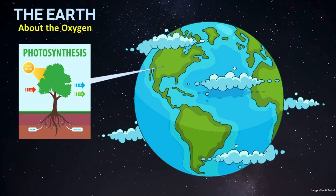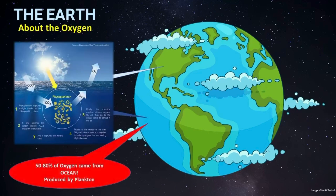But let me tell you one more secret: 50 to 80% of the oxygen on this Earth comes from the ocean. Yes, from the ocean. Oxygen comes from an aquatic life called plankton in the ocean. So now you can see how important the ocean is to human life.